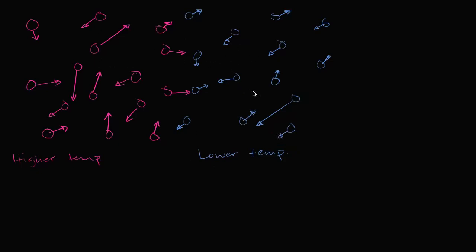Now, if this is our initial state, what do we think is going to start happening? Before, the different groups of gases were colliding with themselves — magenta with magenta, blue with blue — but now they're going to start colliding with each other. When this magenta molecule collides with this blue molecule, it's going to transfer some kinetic energy to it.